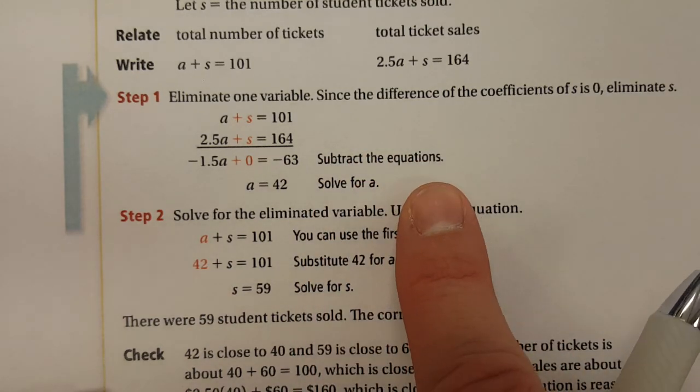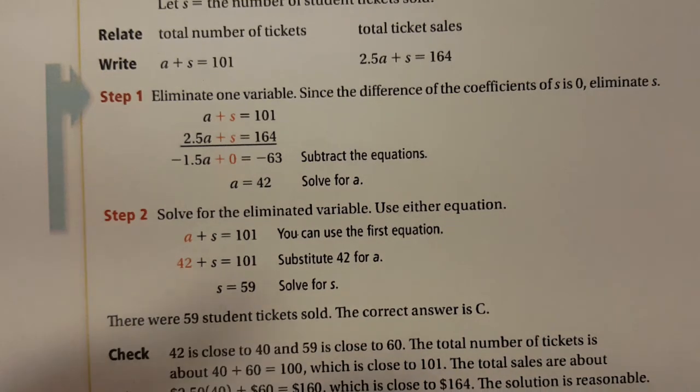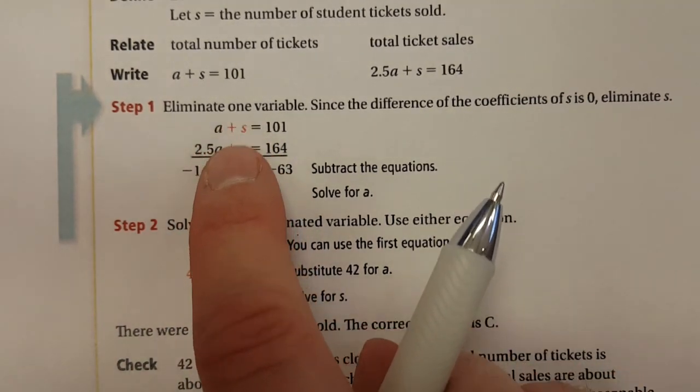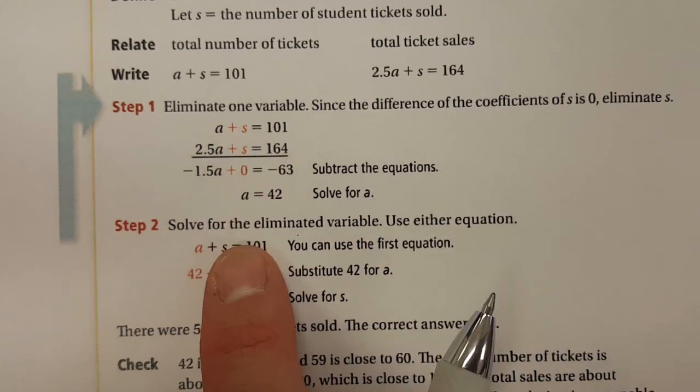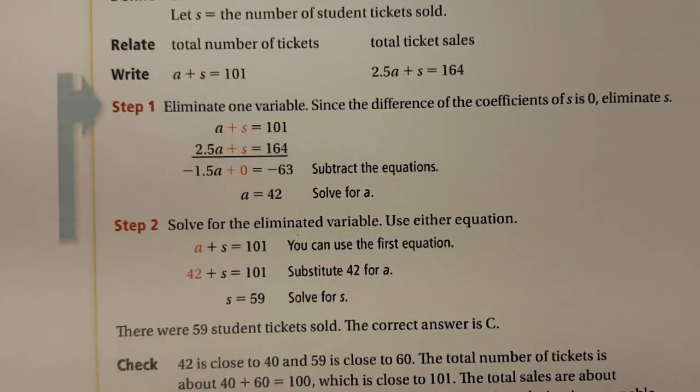So you can actually subtract the equations. Why would you subtract in this case? You don't have opposites, you have like terms. So when you have like terms and you want one of them to cancel, you can straight up use subtraction or you can use a negative 1, which I'll show you as well.